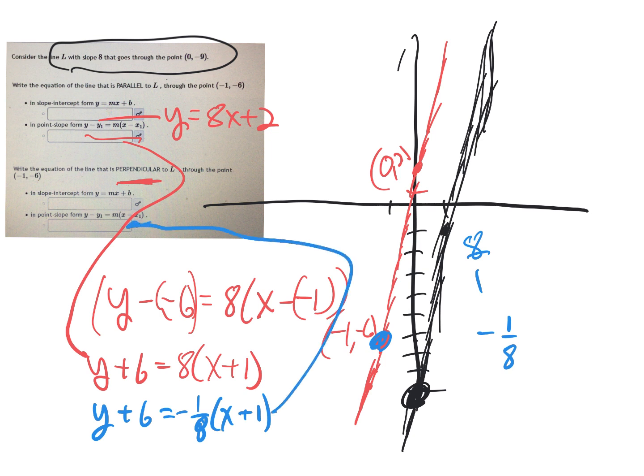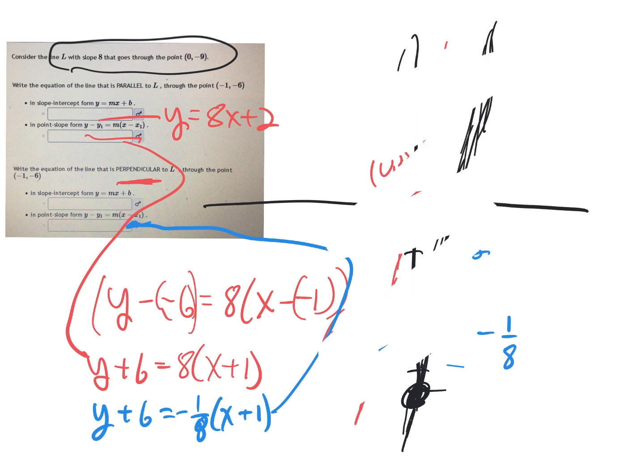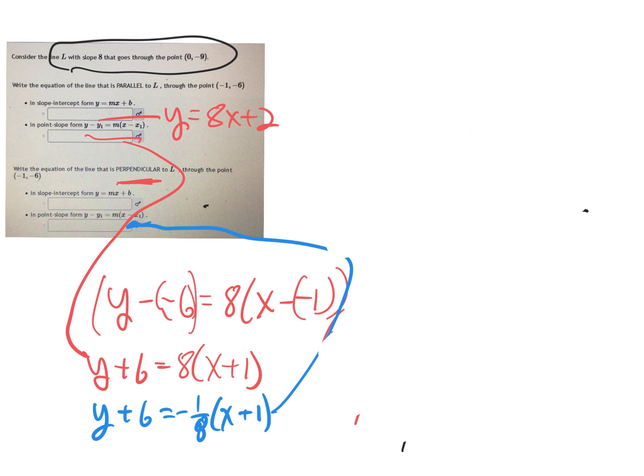And then to find the y-intercept form, the easy way to do it—my ninth graders at Oxbow would want me to do it this way—they say, hey, we know the slope, we don't know B. I know it passes through the point (-1, -6). So -6 equals -1/8 times (-1) plus B.